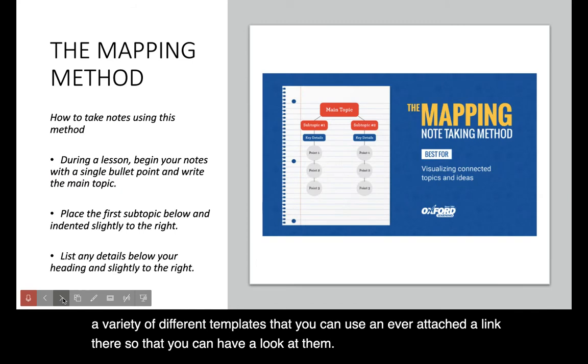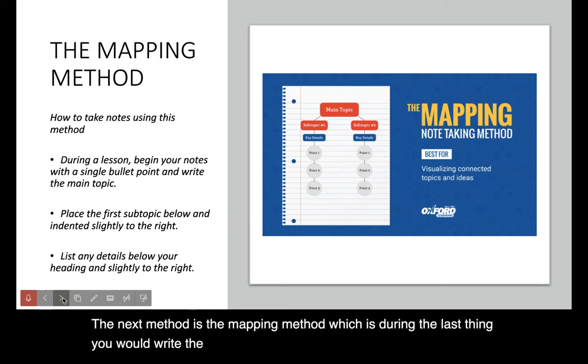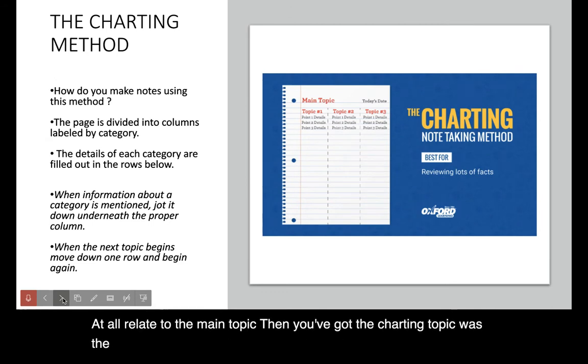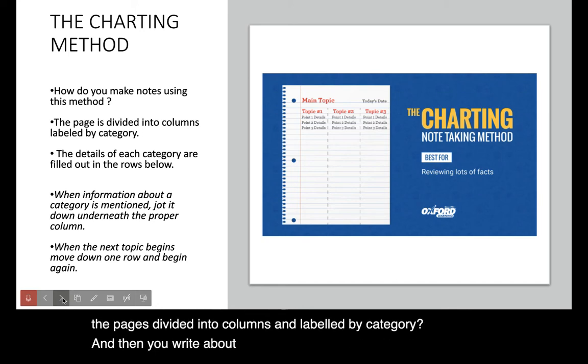The next method is the mapping method, which is during the lesson you would write the main topic at the top of your mapping and then you would place sub-topics below that all relate to the main topic. Then you've got the charting topic where the page is divided into columns and labelled by category, and then you write about each topic in each of the columns.